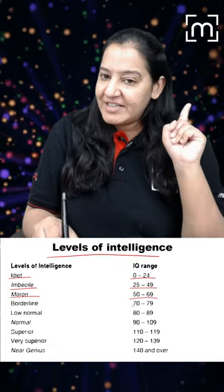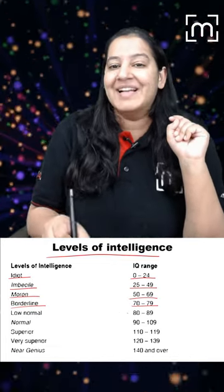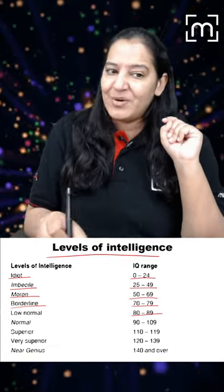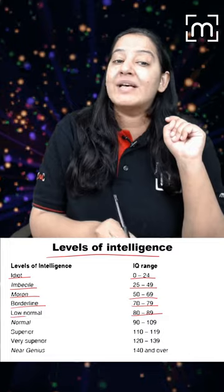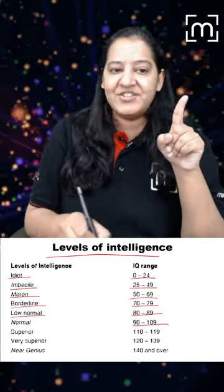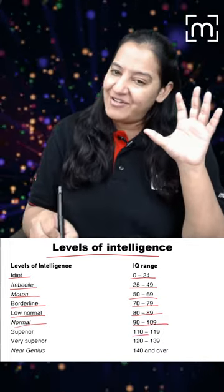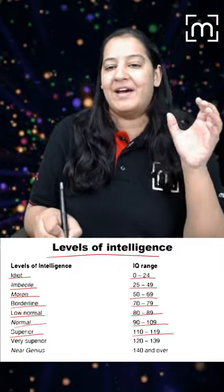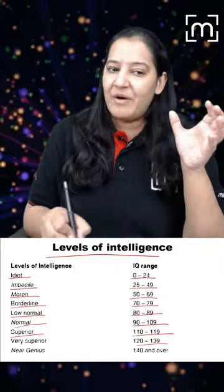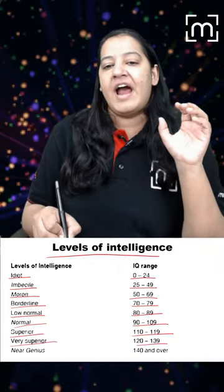When 70 to 80, it is known as borderline. When 80 to 90, it is known as low normal. 90 to 110 is normal. 110 to 120 is superior. 120 to 140 is very superior.